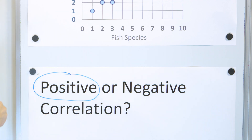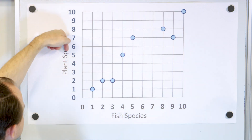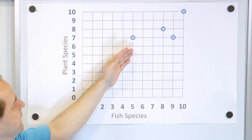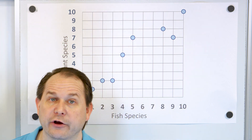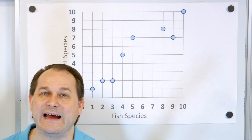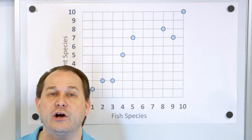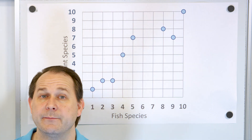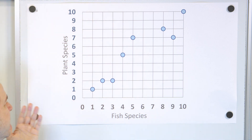So it's a positive correlation. If the data were going down — as the species of fish go up, the plant species goes down — that would be a negative correlation. This is a positive correlation: as one variable goes up, the other variable also goes up. Later in future classes, you can take this raw data and calculate something called the correlation coefficient, which is just a number — the higher the number, the more tightly correlated this data is.